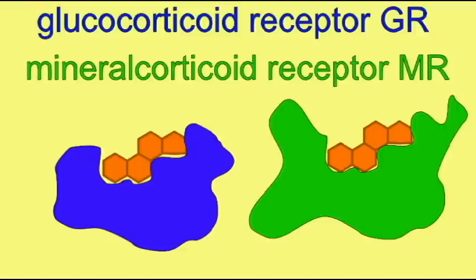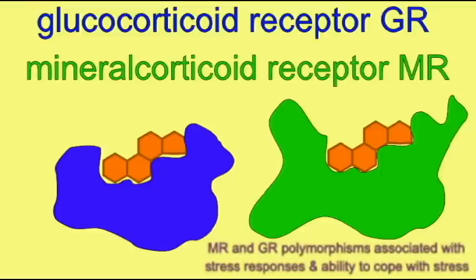Not all people express the same variant of these two receptors, and MR and GR polymorphisms or variants have been associated with differences in stress responses and the ability to cope with stress.